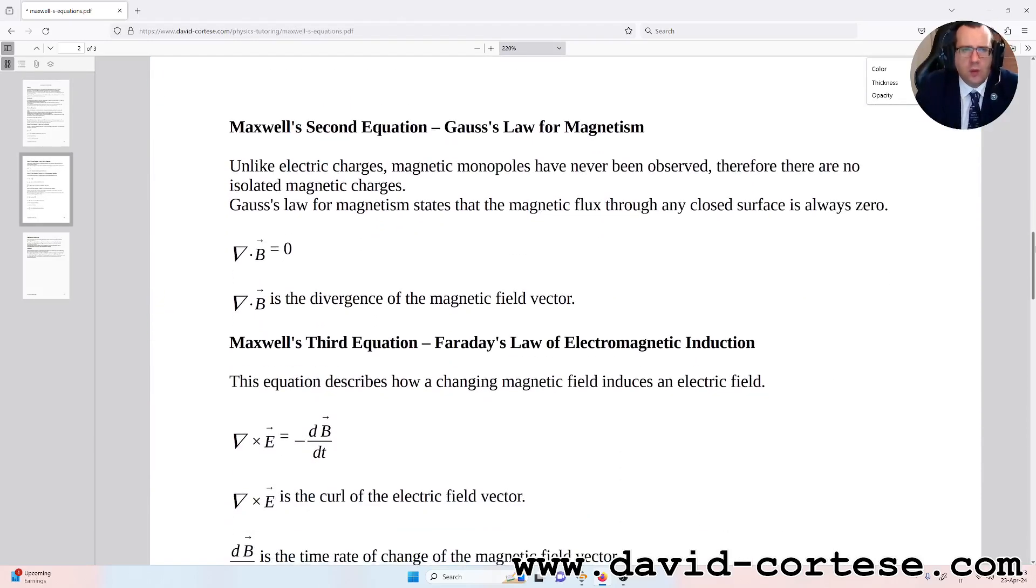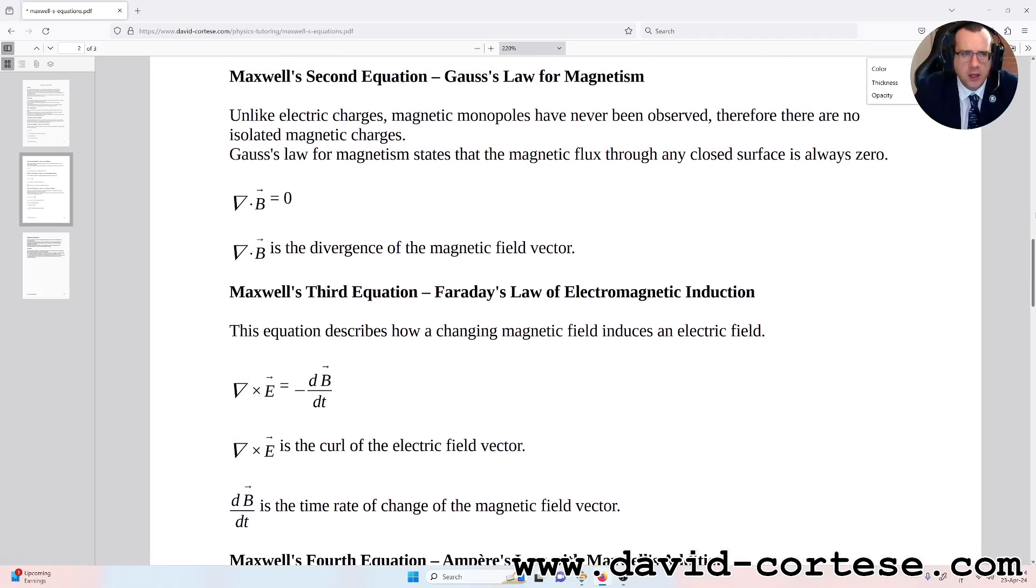Maxwell's second equation: Gauss's law for magnetism. In addition to electric charges, magnetic monopoles have never been observed. Therefore, there are no isolated magnetic charges. Gauss's law for magnetism states that the magnetic flux through any closed surface is always zero. So, nabla scalar product B equals zero. Nabla scalar product B is the divergence of the magnetic field vector.